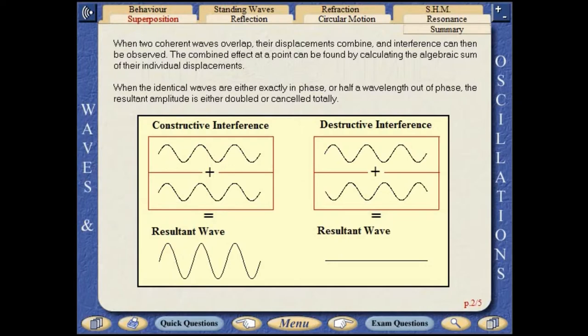When two coherent waves overlap, their displacements combine and interference can be observed. The combined effect at a point can be found by calculating the algebraic sum of their individual displacements. When the identical waves are either exactly in phase or half a wavelength out of phase, the resultant amplitude is either double the amplitude of an original wave or zero.